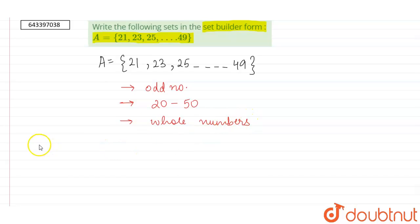We can say that A is set of X where X is an odd number.